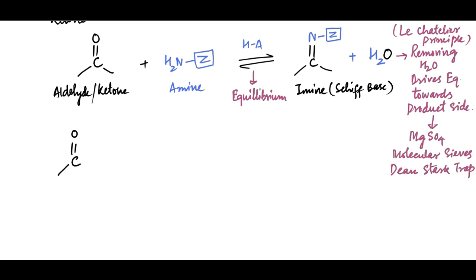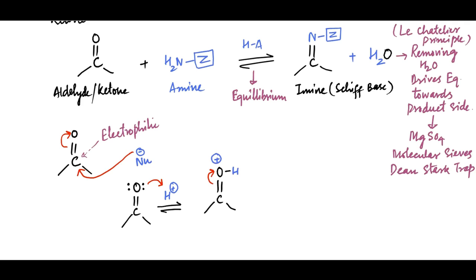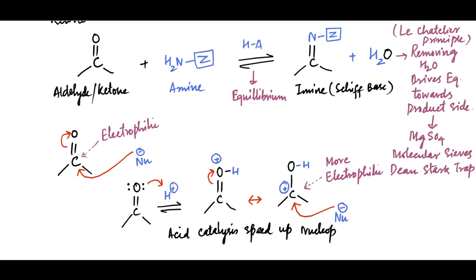Recall that the carbonyl carbon of aldehydes and ketones is an excellent electrophile and can undergo addition reactions with good nucleophiles. To speed up the reaction, mild acid catalyst is used so that acid makes carbonyl carbon into better electrophile by breaking the pi bond towards oxygen. Thus we can say, acid catalysis speeds up the nucleophilic addition.